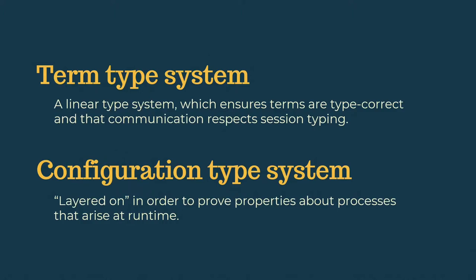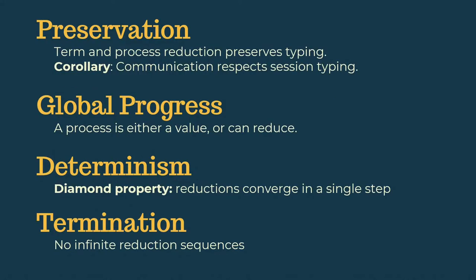So GV relies on two typing judgments. The first ensures that terms are well-typed, and this is what you'd write a type checker for. And the second is an extrinsic type system for runtime processes, and this is layered on to help us state invariants which let us prove properties about GV. So because of its correspondence with linear logic, GV is very well-behaved. So as you'd expect, it satisfies the preservation property, which by extension ensures that every communication action is supported by a session type. In addition, GV also enjoys global progress, which means that there are no deadlocks and that the system doesn't get stuck. And finally, GV is deterministic and also strongly normalizing.